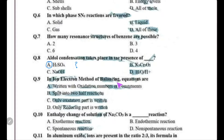In the ion-electron method, the balancing equations are written by splitting into two half-reactions. Only the oxidation part is written in one half and only the reduction part in the other. In the ion-electron method, the first step is to divide the reaction into two halves. So choice B is correct.